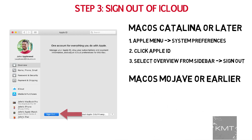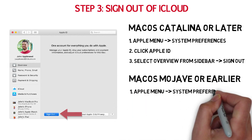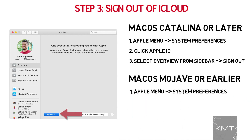If you're using macOS Mojave or earlier, choose Apple menu, System Preferences, click iCloud, then click Sign Out. You will be asked whether to keep a copy of your iCloud data on this Mac. Click Keep a Copy because you're erasing your Mac later. Your iCloud data remains in iCloud and on any other devices signed in to iCloud with your Apple ID.